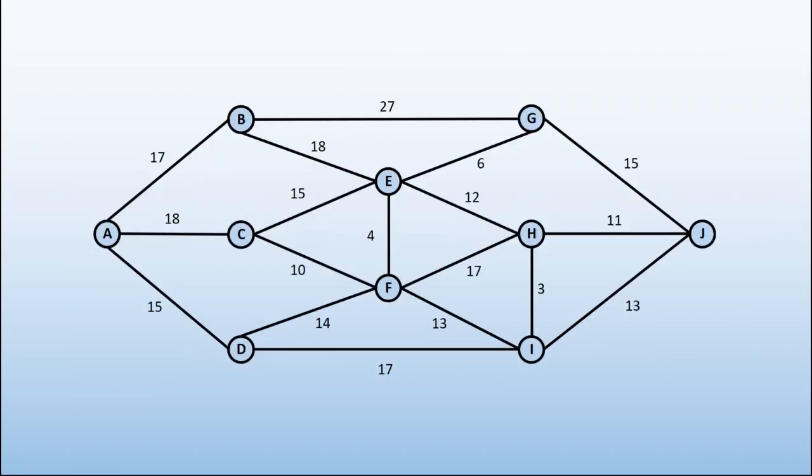In Dijkstra's algorithm, we look to find the shortest path from one vertex to another. We do this through making a series of labels attached to each vertex, and so we need to bring up a box.